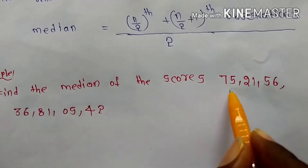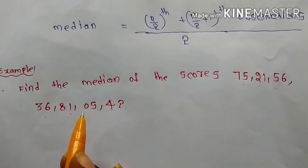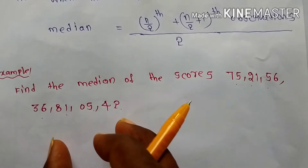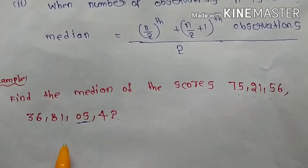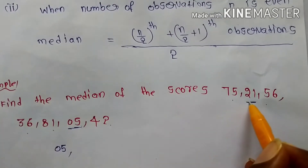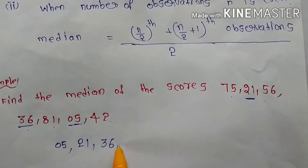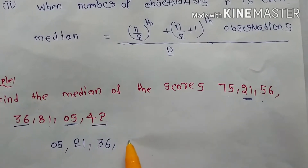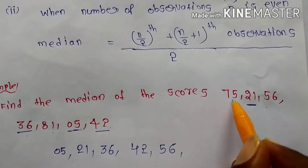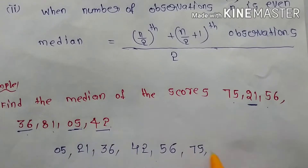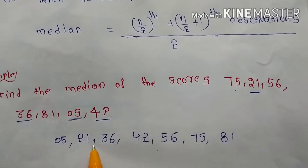For example, find the median of the scores: 75, 21, 56, 36, 81, 5, 42. First, write the observations in ascending order. Starting from the smallest: 5, 21, 36, 42, 56, 75, 81.